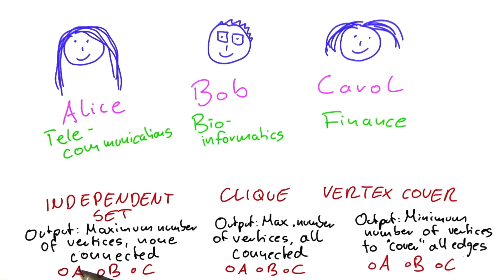And the way I want you to answer this is for each of the problems to select if that was the problem that Alice was working on, the problem that Bob was working on, or the problem that Carol was working on. And the same here for clique and vertex cover.